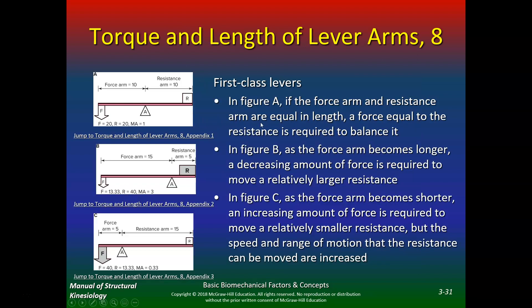Looking at torque and lever arms in a first class lever: when the force arm and resistance arm are equal length, a force equal to the resistance develops and the mechanical advantage is one. You can improve the mechanical advantage in a first class lever by having the axis closer to the resistance, giving a mechanical advantage of three. We can't change where our muscles insert or the levers in the body, but we can be more efficient with good posture and good technique.